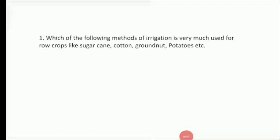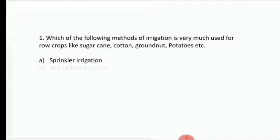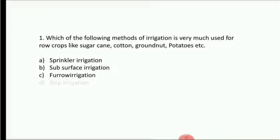We are going to discuss some questions about irrigation. Which of the following methods of irrigation is very much used for row crops like sugarcane, cotton, groundnut, potatoes etc? Option A: sprinkler irrigation, Option B: subsurface irrigation, Option C: furrow irrigation, Option D: drip irrigation.